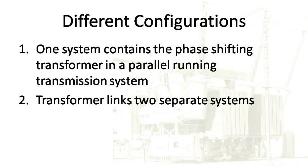There are two key arrangements or configurations for the use of phase-shifting transformers. The first is power transfer between parallel running transmission systems, in which one of the systems contains the phase shift transformer. The other key arrangement is a single transmission line containing the phase shift transformer that links two otherwise separate power systems.